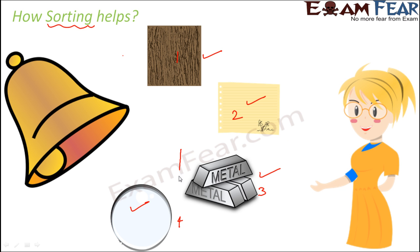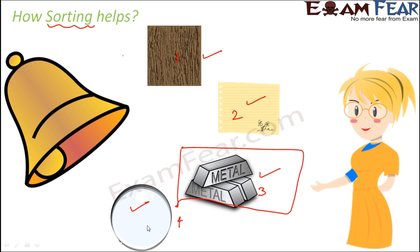Obviously you would say metal, because the bells you have seen around yourself are made up of metals. Now why not wood? Because wood does not produce sound — even if you strike something with wood you do not get a sound like you do with metals, and the purpose of a bell is to produce sound. Paper neither produces sound nor is it strong enough; when you shake or vibrate a bell it should not get broken or torn. Glass is quite fragile, so if you strike it hard with some other object it will break.